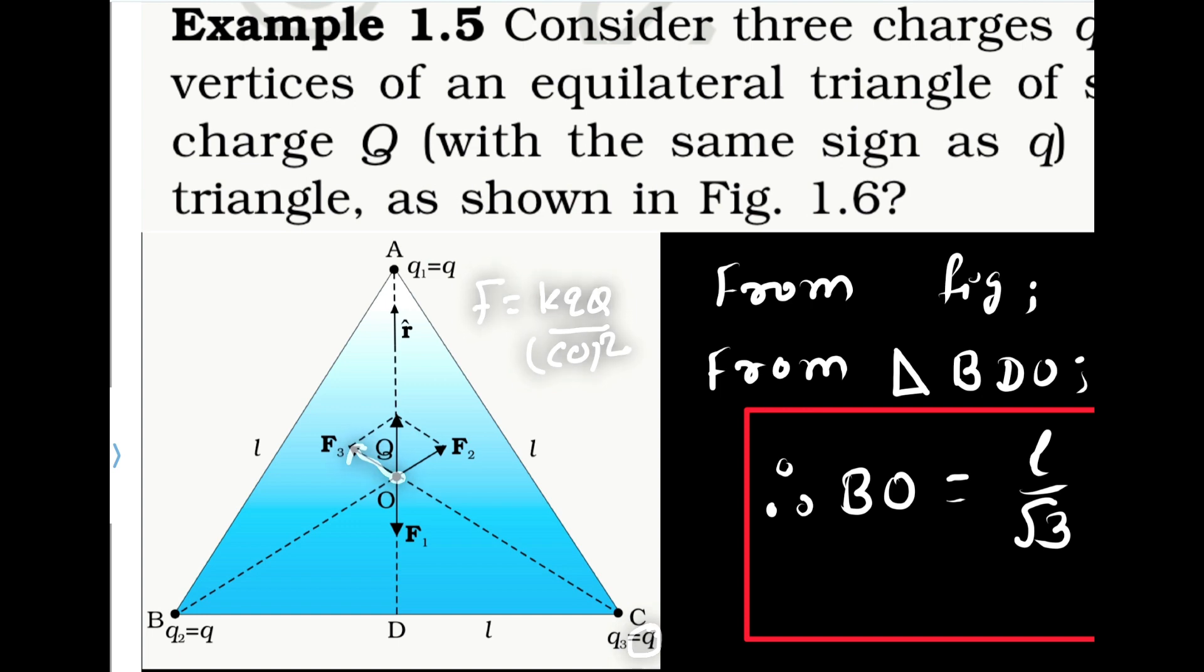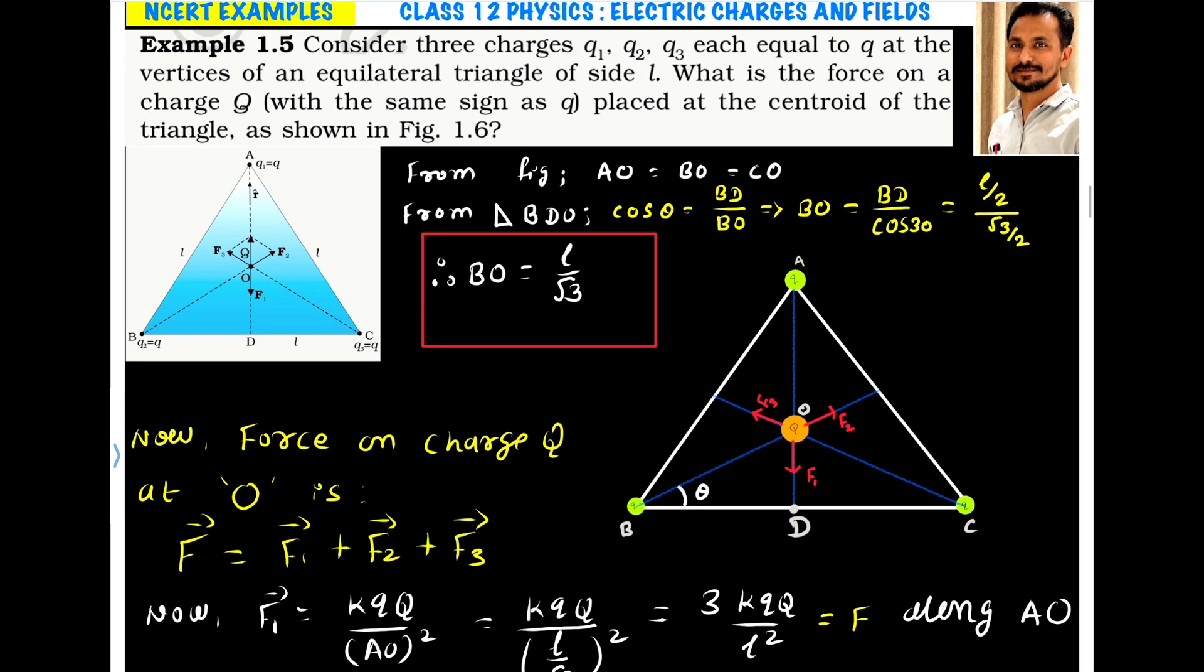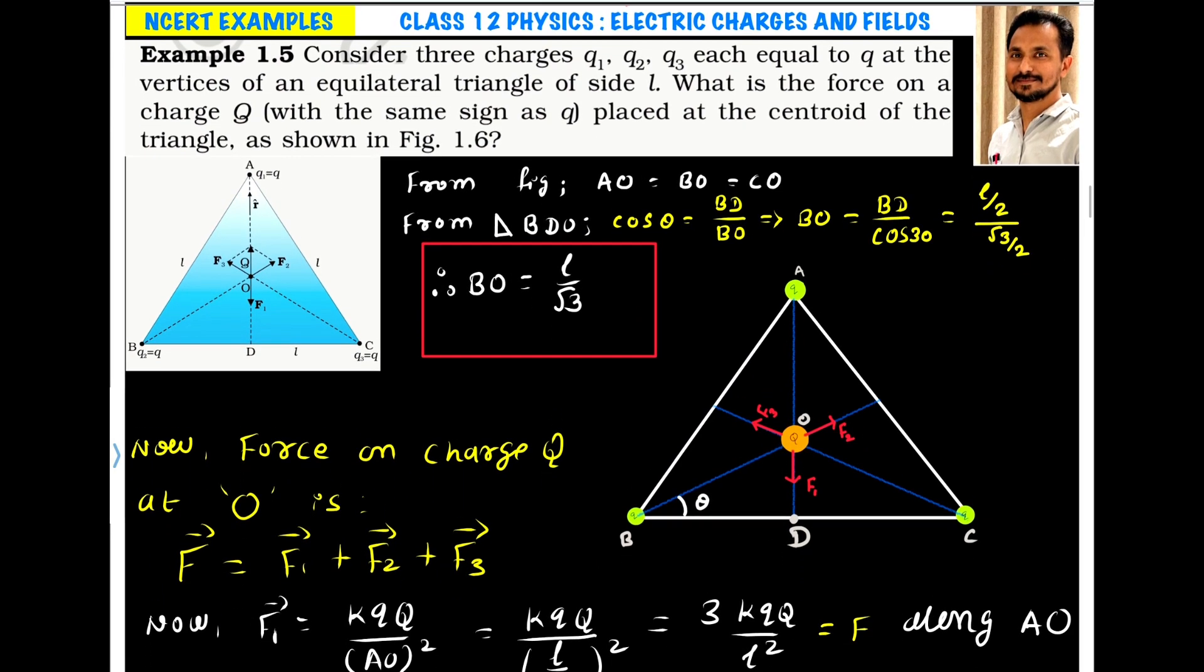In all these cases, we have to find the value of AO, BO and CO. Now, from figure, we know that the length of AO, BO and CO is same. So AO, BO and CO are equal. Now, if I consider this triangle BDO, this triangle, here I have drawn BDO, this triangle.